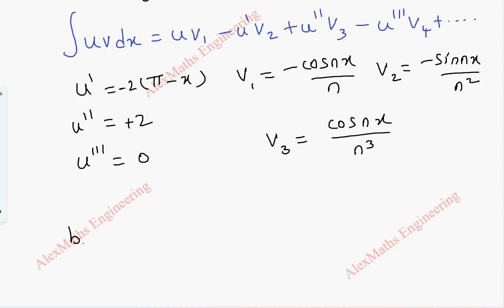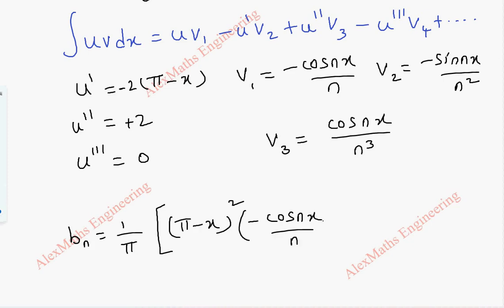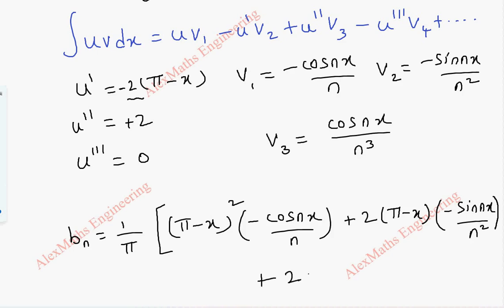Applying all these in the formula, bₙ = (1/π) times [(π − x)² · (−cos(nx)/n) + 2(π − x) · (−sin(nx)/n²) + 2 · (cos(nx)/n³)], evaluated from 0 to 2π.